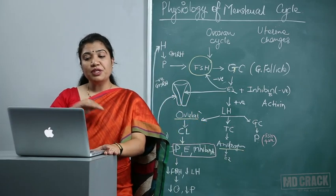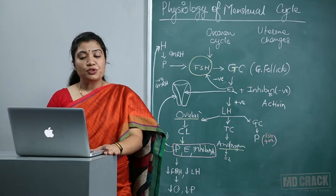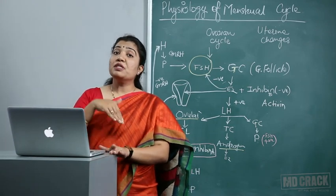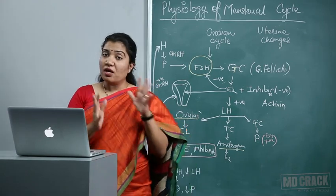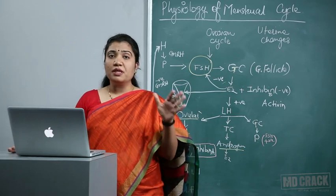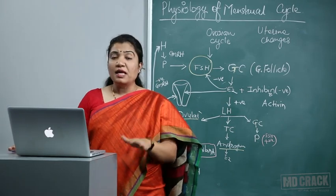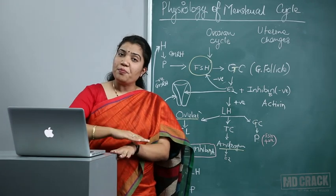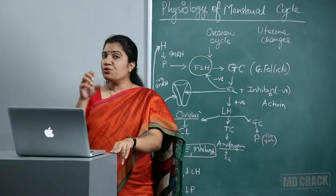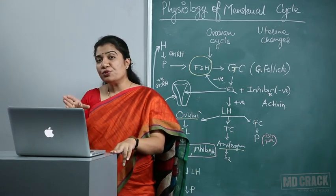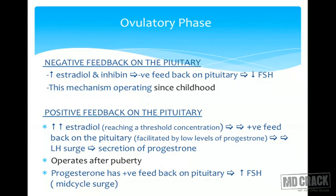The LH surge leads to progesterone secretion, and progesterone has positive feedback on the pituitary, increasing FSH. Around ovulation, as LH increases it causes progesterone secretion, and this progesterone has positive feedback on FSH, leading to a second FSH surge. This leads to increased estrogen levels, making the cervical mucus spinnbarkeit — that typical pre-ovulatory mucus — due to maximum estrogen in the pre-ovulatory phase.